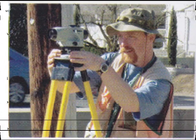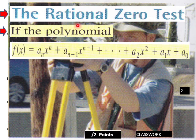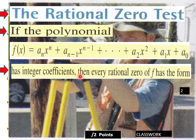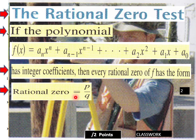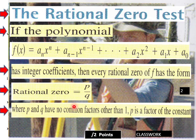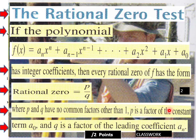The rational zero test: if the polynomial — in standard form, everything descending left to right — has integer coefficients, then every rational zero of f has the form p over q. Where p and q have no common factors other than one, p is a factor of the constant term a-naught, and q is a factor of the leading coefficient a-sub-n. So we put p over q and factor that out as possible zeros.